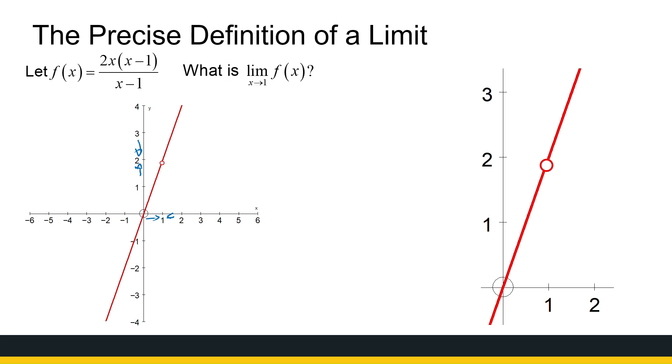We're going to zoom in and we're going to say, how far, what x values can I choose if I want to get a certain distance away from 2? Because we know my limit value is going to be 2. That limit value is 2. In this case, it's 2.